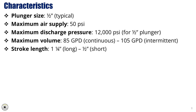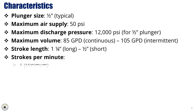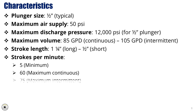The stroke system offers two configurations: a 1¼-inch long stroke and a half-inch short stroke, enabling fine-tuned control over injection volumes. The stroke rate can be adjusted, with a minimum of 5 strokes per minute, a maximum of 60 strokes per minute for continuous use, and up to 75 strokes per minute for intermittent operations. These characteristics make the TechSteam Pump a reliable and adaptable tool for precise chemical injection in well-testing environments.